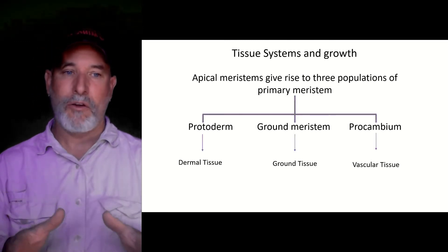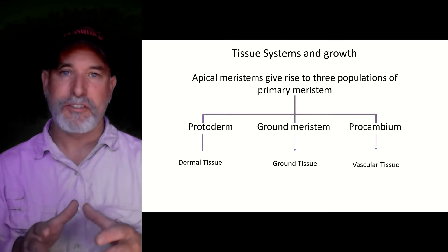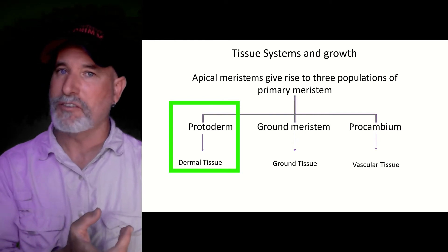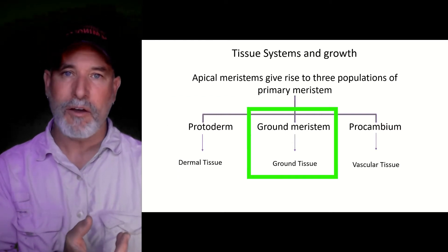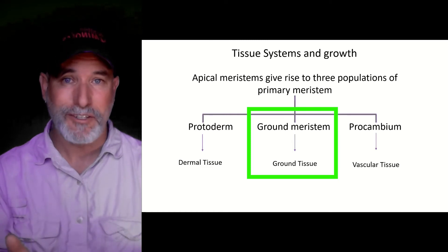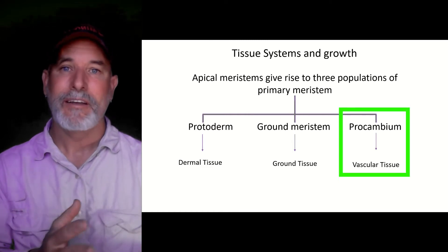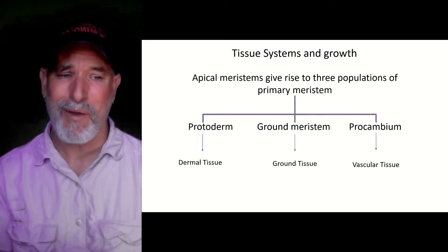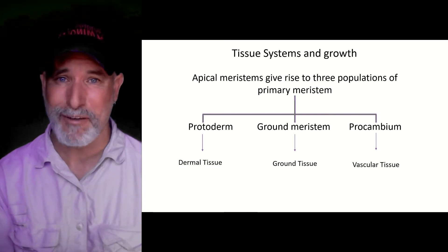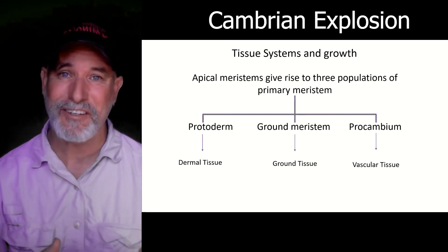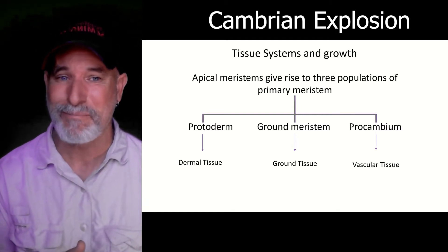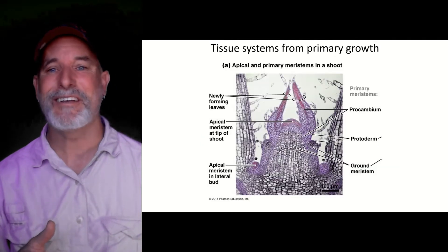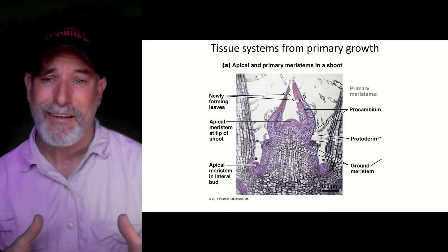The apical meristems give rise to three different populations of primary meristem: protoderm gives rise to dermal tissue, ground meristem gives rise to ground tissue, and procambium gives rise to vascular tissue. I might sometimes slip up and say 'procambrium' — I'm used to saying 'Cambrian explosion' — but there's no R, it's just cambium.